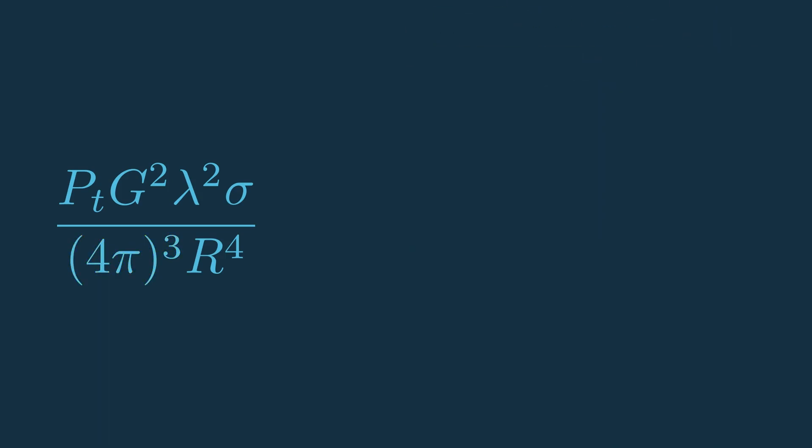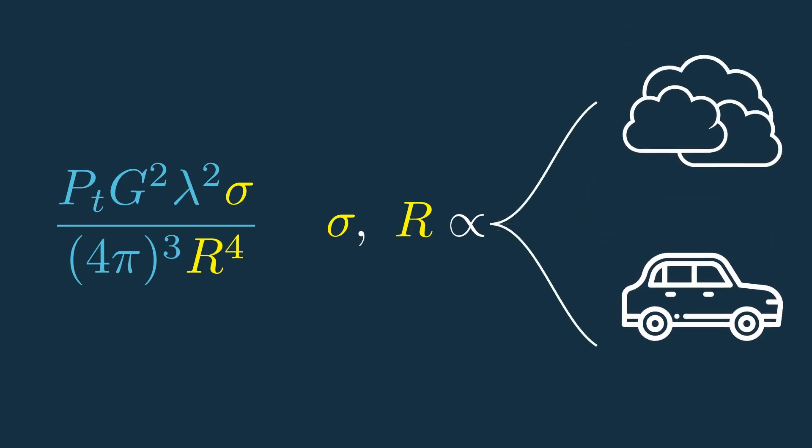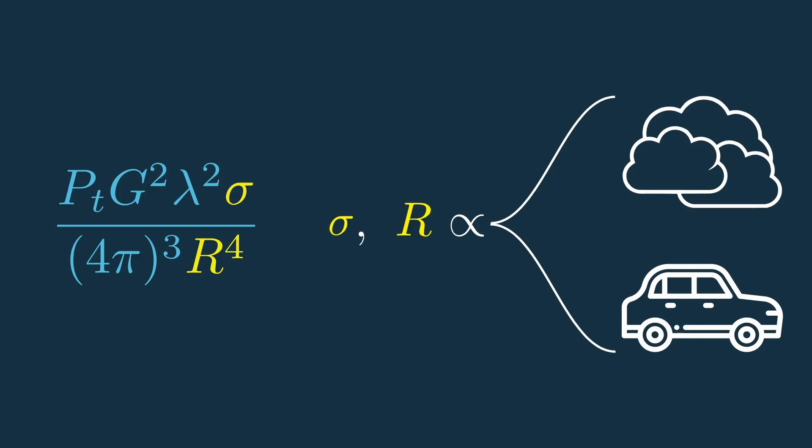Now these last two items are the radar cross-section and the target's range, and both are related to the actual target that we're looking at. The radar cross-section is relative to how big the target is, and the range is how far away the target is. This means that depending on what and where your target is, the SNR will change.